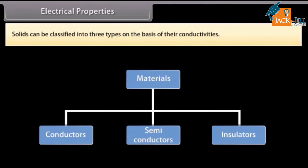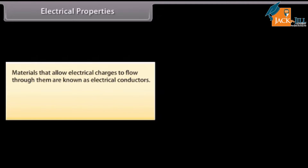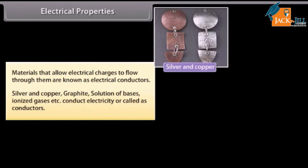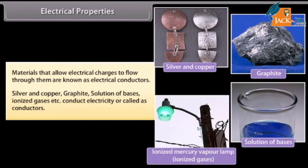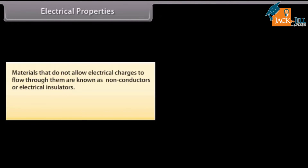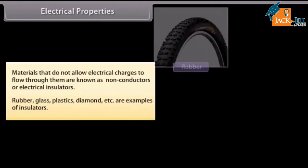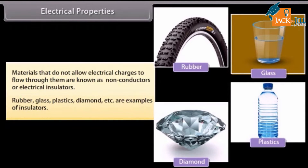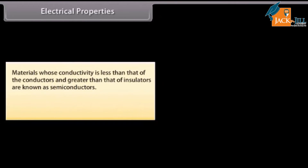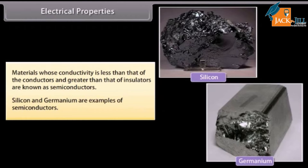Electrical properties: Solids can be classified into three types on the basis of their conductivities. Materials that allow electrical charges to flow through them are known as electrical conductors. Materials that do not allow electrical charges to flow are known as non-conductors or electrical insulators — rubber, glass, plastics, and diamond are examples. Materials whose conductivity is less than that of conductors and greater than that of insulators are known as semiconductors. Silicon and germanium are examples of semiconductors.